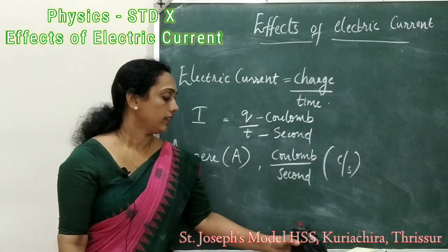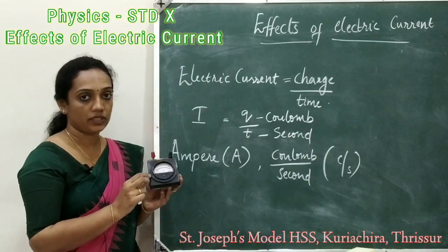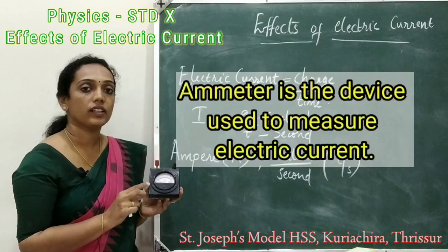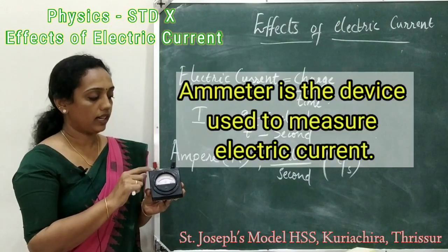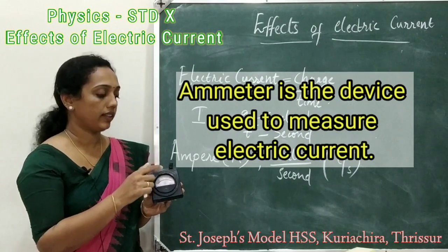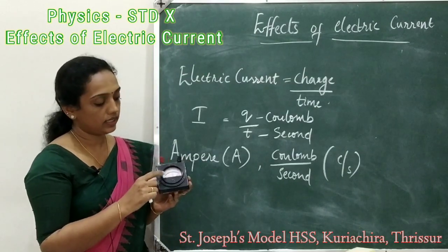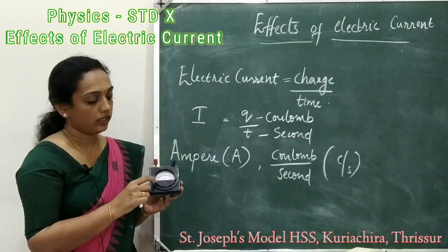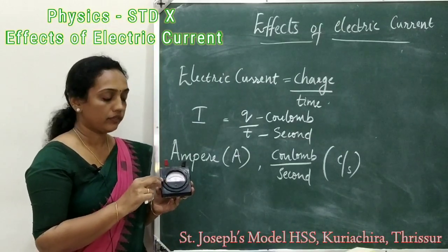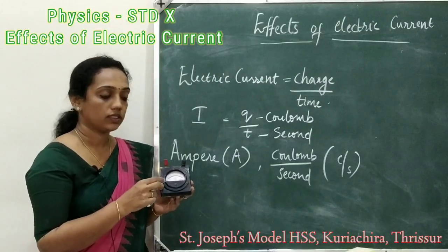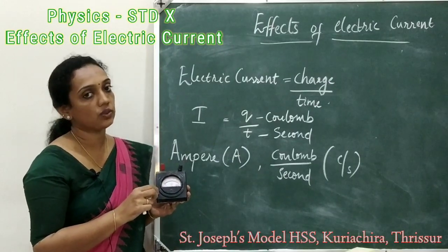You are familiar with this device — this is an ammeter. Ammeter is the device used to measure electric current. This red terminal is its positive terminal and this black is its negative terminal. There is a needle inside this ammeter. If we connect it in an electrical circuit and current flows, the needle inside the ammeter deflects and shows a reading.